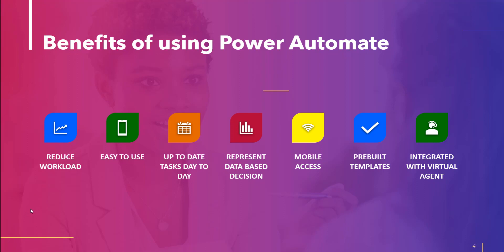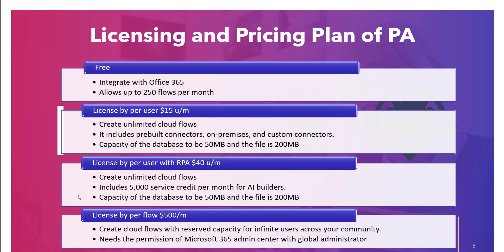Let's discuss the licensing and pricing of Power Automate. There are four types of licensing and pricing plans: free, licensed by power user, licensed by power user with RPA, and licensed by power flow. The free plan is integrated with Office 365 and allows up to 250 flows per month, but RPA and AI services are not available in the free license.